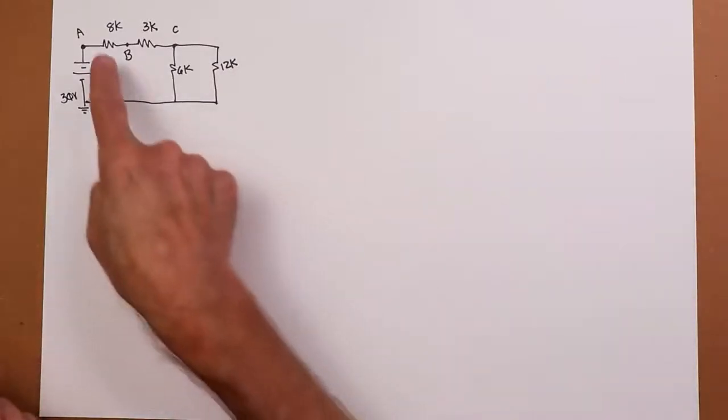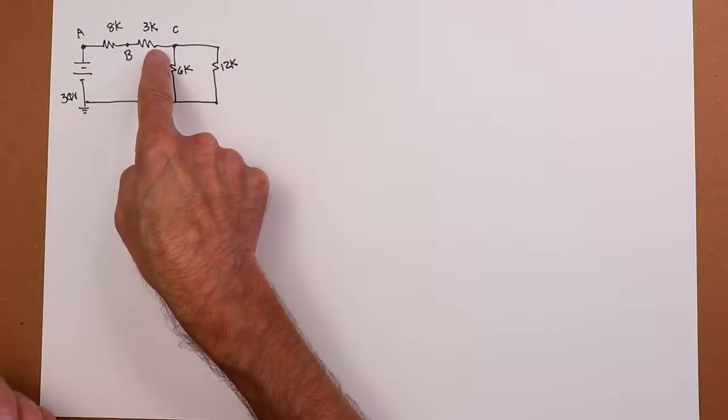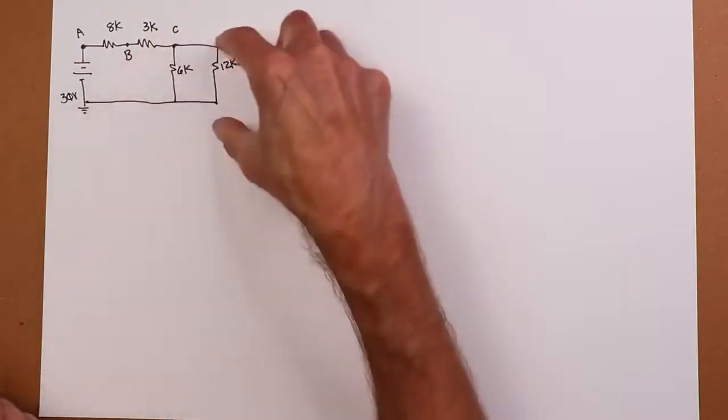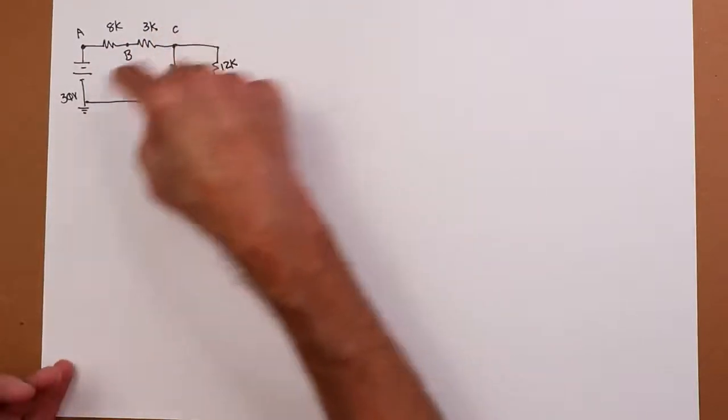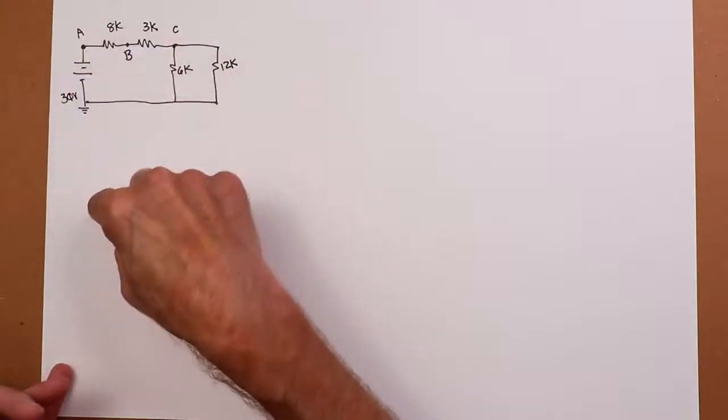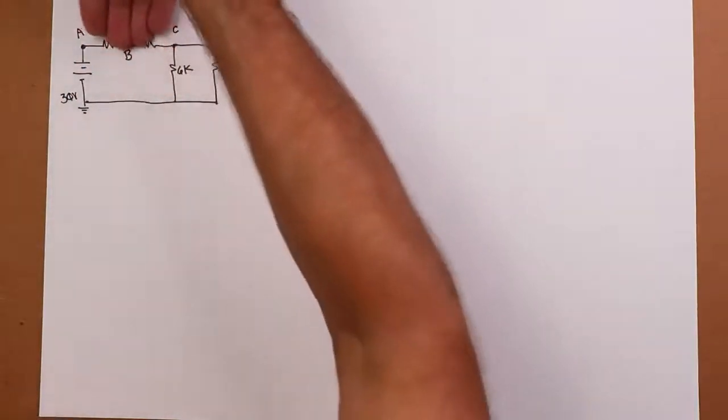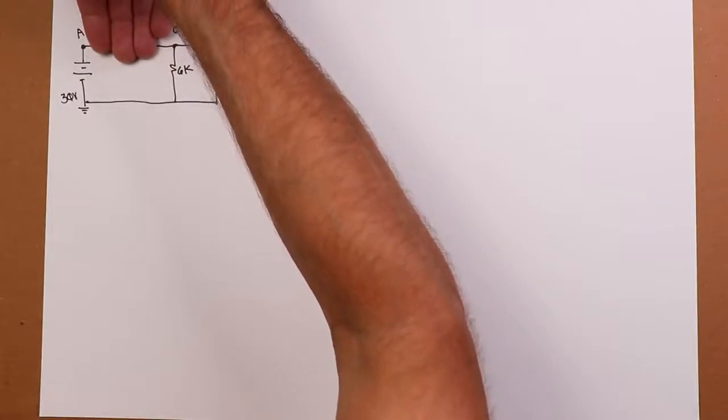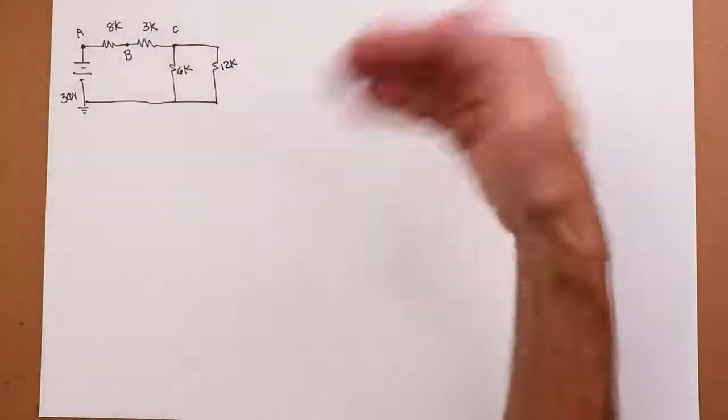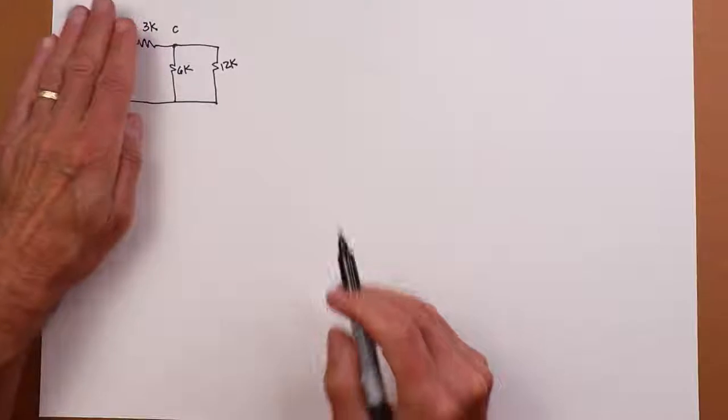But it's not entirely parallel either because there would really only be two points in the parallel network. The voltage everywhere would be constant rather than the current everywhere being constant like in a series circuit. Well, you know, we've got this 8K and the 3K. So they don't have to see the same voltage as this. As a matter of fact, the 6 and the 12 don't see the full 30 volts. So we have a series parallel circuit. It's part series, part parallel.